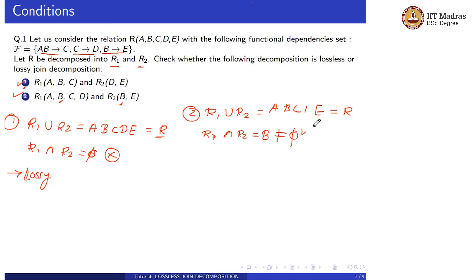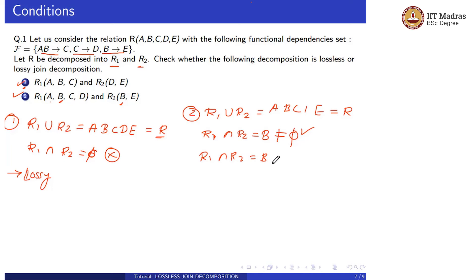The second condition is satisfied. Now let us check the third condition: R1 intersection R2 should determine R1 or R2. R1 intersection R2 is B.